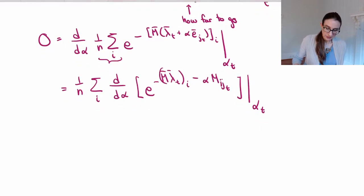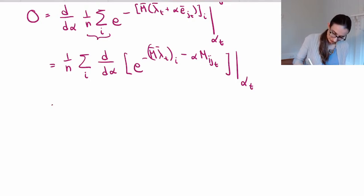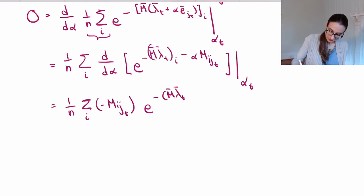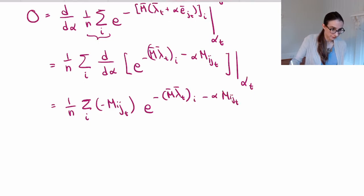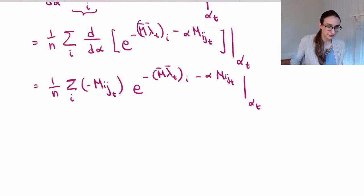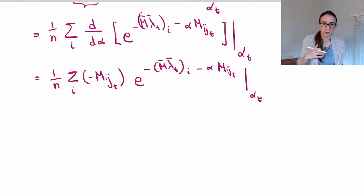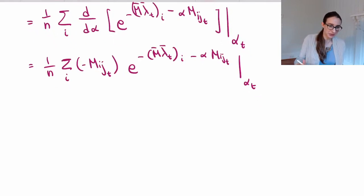Now let's take that derivative. The only thing that comes down is m_{i,j_t}. We then separate the sum into two groups: the points where m_{i,j} equals one, and the points where m_{i,j} equals minus one, because m is a binary matrix — everything is either plus or minus one.